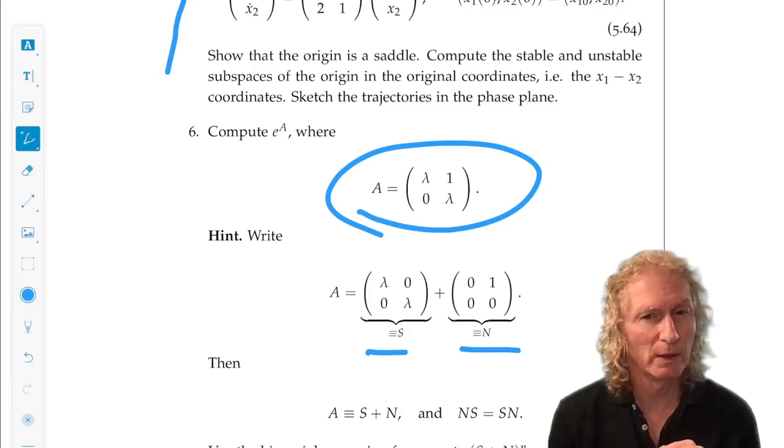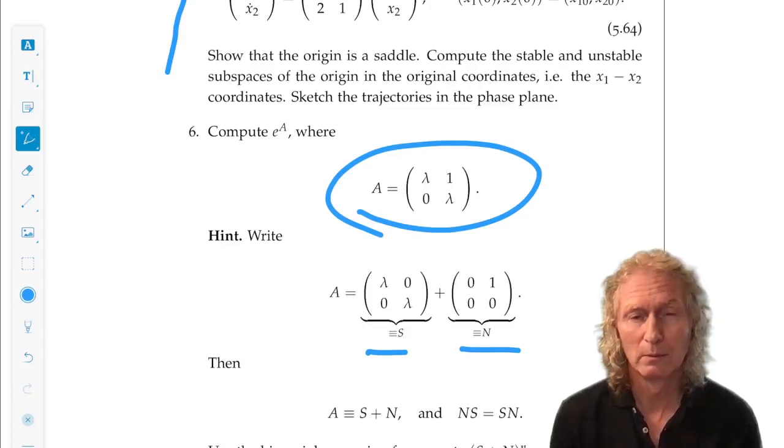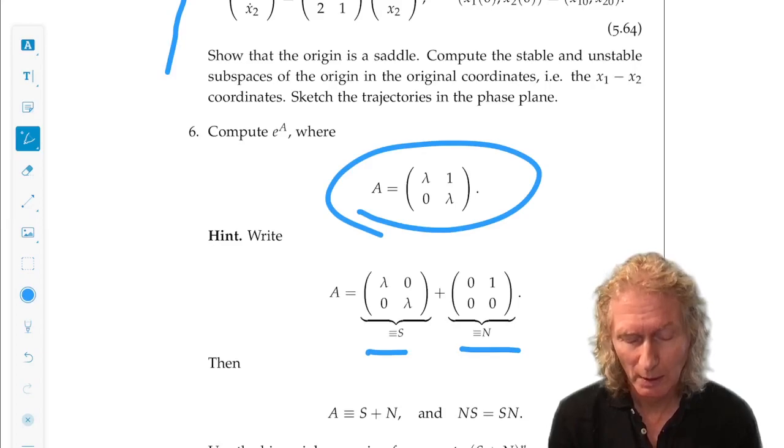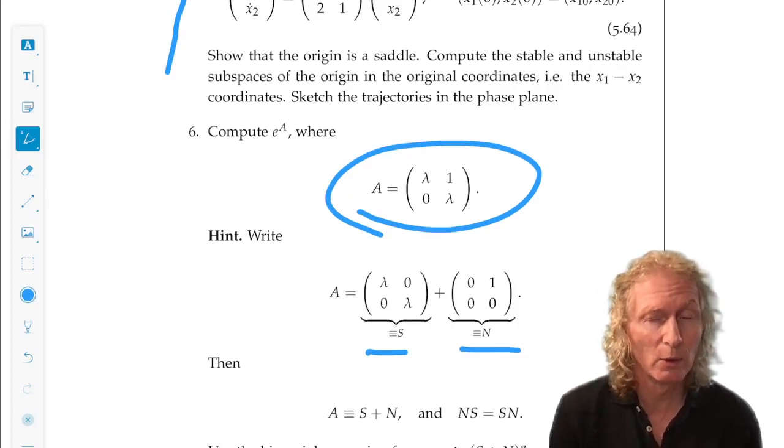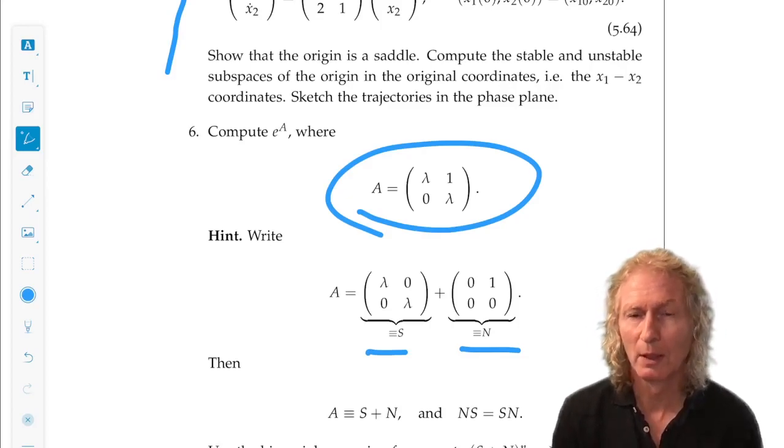So this has zeros down the diagonal and a one in the off-diagonal element. And the significance of that is if you raise N to a certain power it will be zero and all powers thereafter it will be zero.